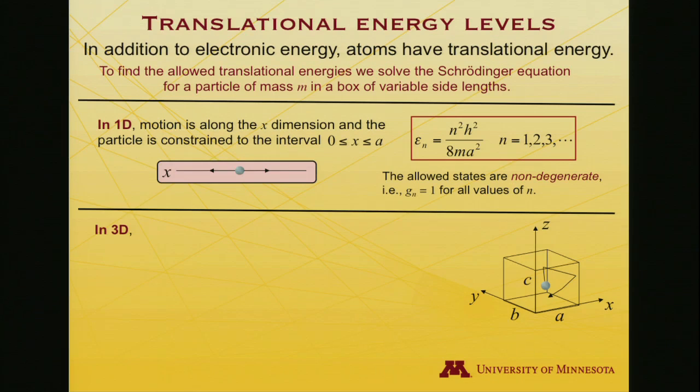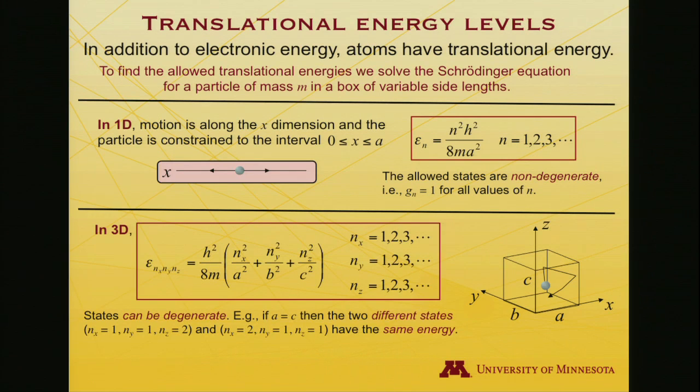If we go to three dimensions, it's a little bit more complicated. Obviously, our box can be a little more complicated. I've got a little particle here. It's bouncing around. A for one length, B for another length, C for another length. I've drawn what looks like a cube, but they don't have to all be equal. And when you do the solution, you find that it has roughly the same structure. There's still this h squared over 8m that you find here, h squared over 8m, where m is the mass.